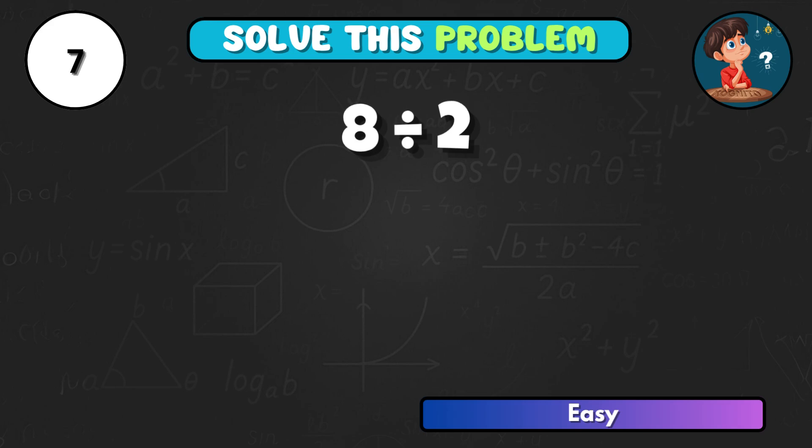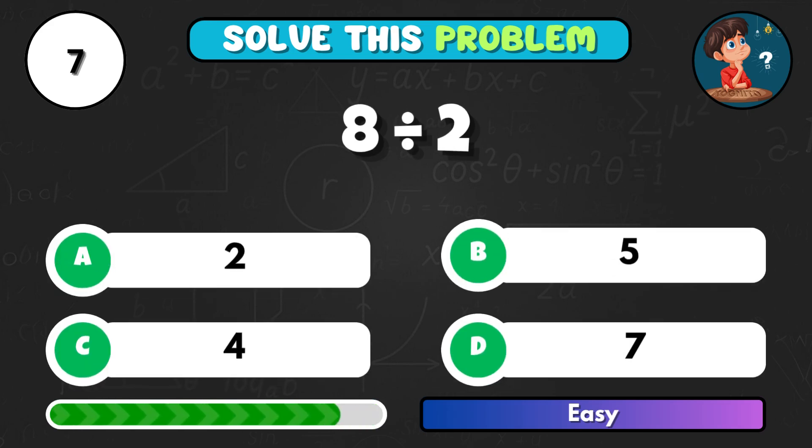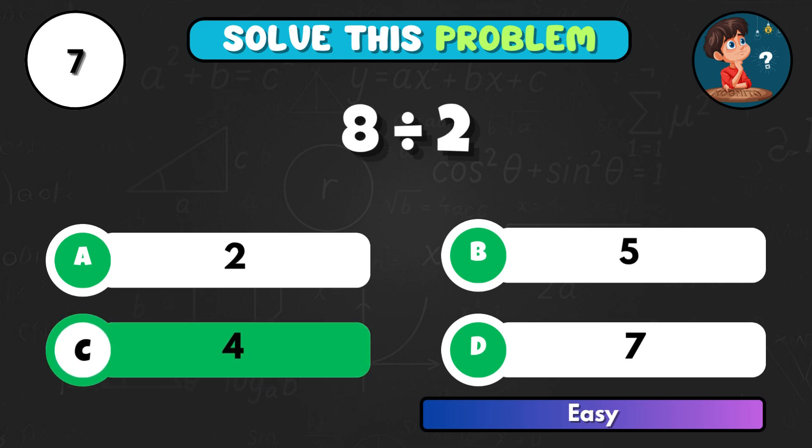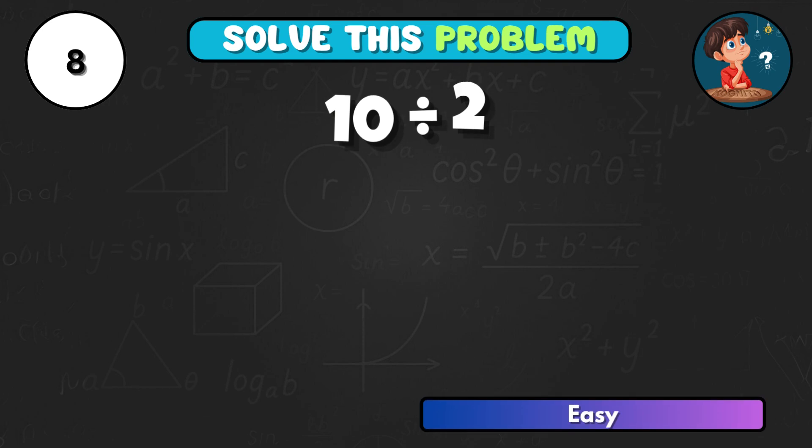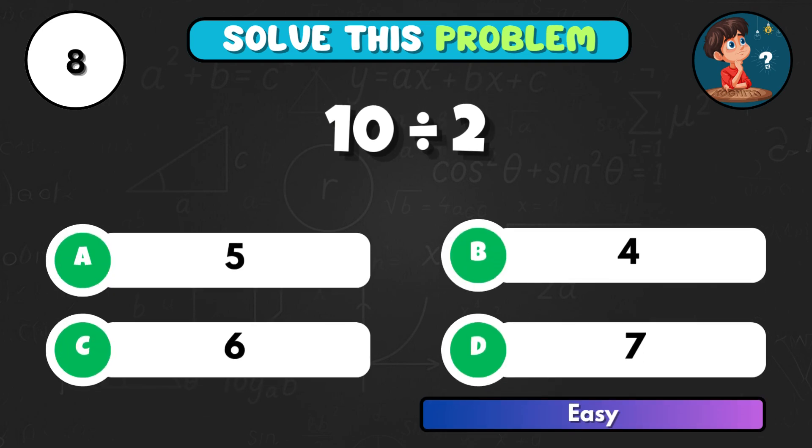Now let's pick up the pace. What's 8 divided by 2? Option C equals 4. If 10 is divided evenly between two friends, how much does each get? Correct choice A, giving 5.